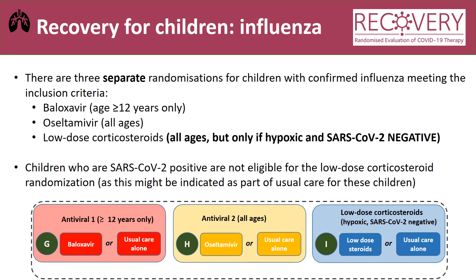For those children with influenza, there are three separate randomisations. First option is baloxavir versus usual care for those greater than or equal to 12 years of age. Second is oseltamivir, open in all ages. Third is low-dose steroids in all ages, but only in those who are hypoxic and COVID negative. The reason that children who are SARS-CoV-2 positive cannot be enrolled in the low-dose corticosteroids arm is that steroids might be indicated as part of usual care for these children.